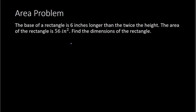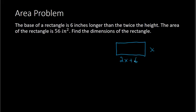In this particular problem, we are dealing with a rectangle. It says the base of a rectangle is 6 inches longer than twice the height, and the area is 56 square inches. Find the dimensions. You can draw a picture if you want. If our height is x, then the base is 6 inches longer than twice that: so twice x is 2x, and 6 inches longer gives us 2x plus 6. So the height is x and the base is 2x plus 6.